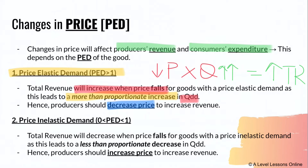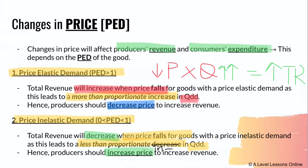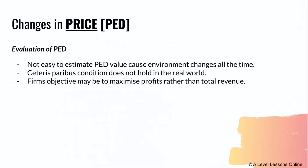For price inelastic demand, a fall in price results in a less than proportionate increase in quantity demanded — due to the inverse relationship between price and quantity demanded from the law of demand. Because the increase in quantity is less than proportionate, overall total revenue will still fall. Hence, producers should increase price for price inelastic goods in order to increase revenue.